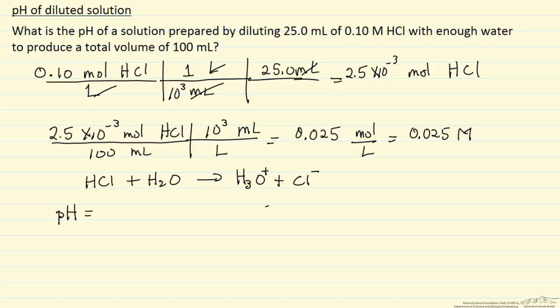The pH is defined as minus the logarithm, base 10, of the concentration of hydronium ion.